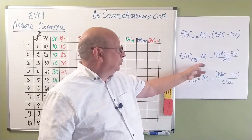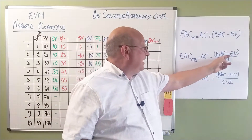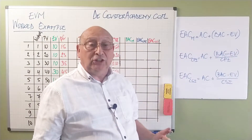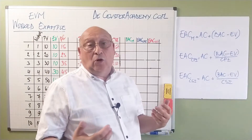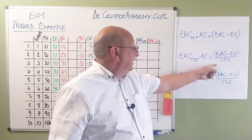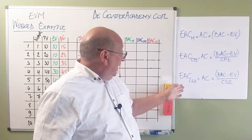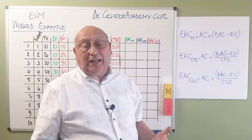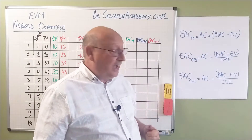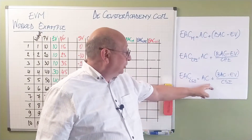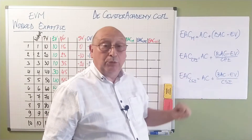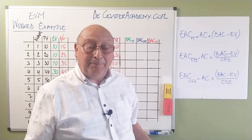We have the actual cost plus the remaining work to be completed, which is the budget at completion minus the already created value divided by the CPI. The last one is the estimate at completion with the CSI, where we have the actual cost plus the budget at completion minus the earned value, but divided by the CSI.